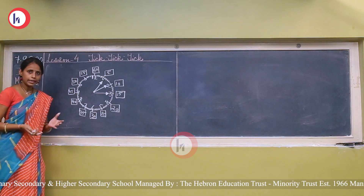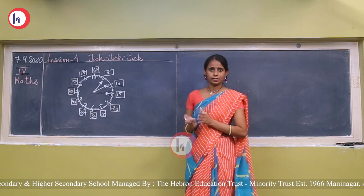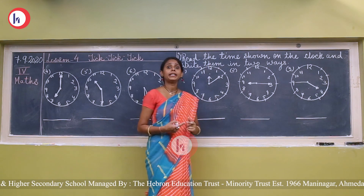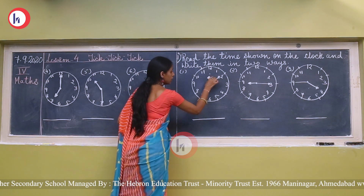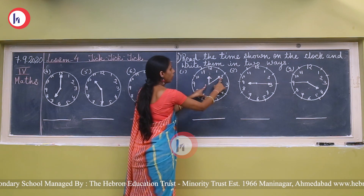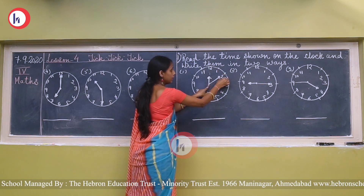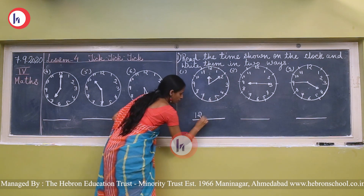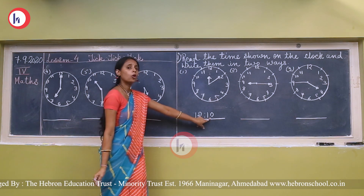Now I will explain how to read the hour hand and minute hand together. Here is the first question: read the time shown on the clock and write it in two ways. First, see where the short hand is — the hour hand is on 12. And where is the minute hand? It is on 2. How many minutes are there? 5 twos are 10 minutes. So the time is 12:10. The first way to write: 12 hours and 10 minutes.